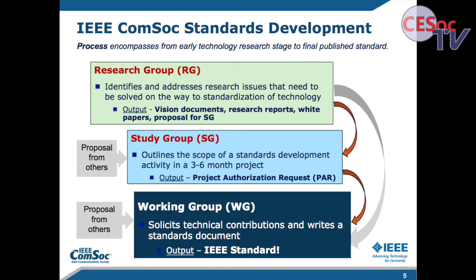What's interesting about the IEEE standardization process is that we have three different kinds of groups. Sometimes when you get together and think you're going to start standardization, it turns out you haven't actually solved all the research problems yet. So we provide a mechanism within IEEE, within COMSOC for instance, to create a research group that identifies issues standing in the way of standardization. The output might be vision documents, research reports, white papers, or other publications. In general, the group works to solve research issues before starting standardization.